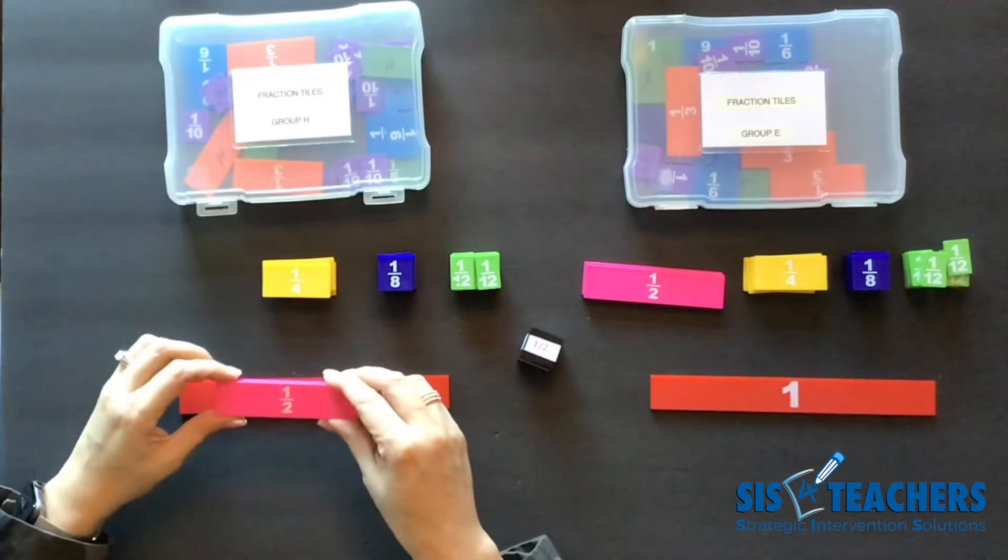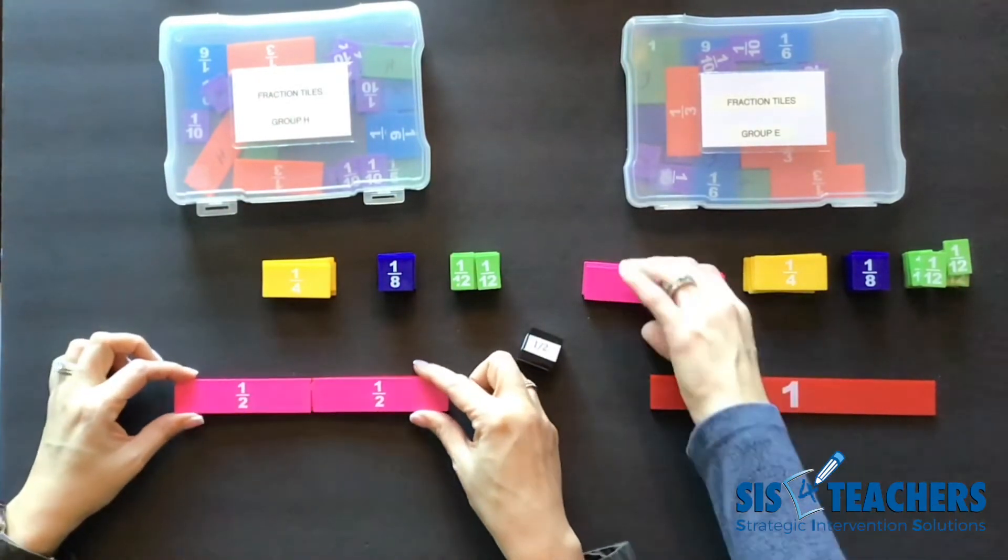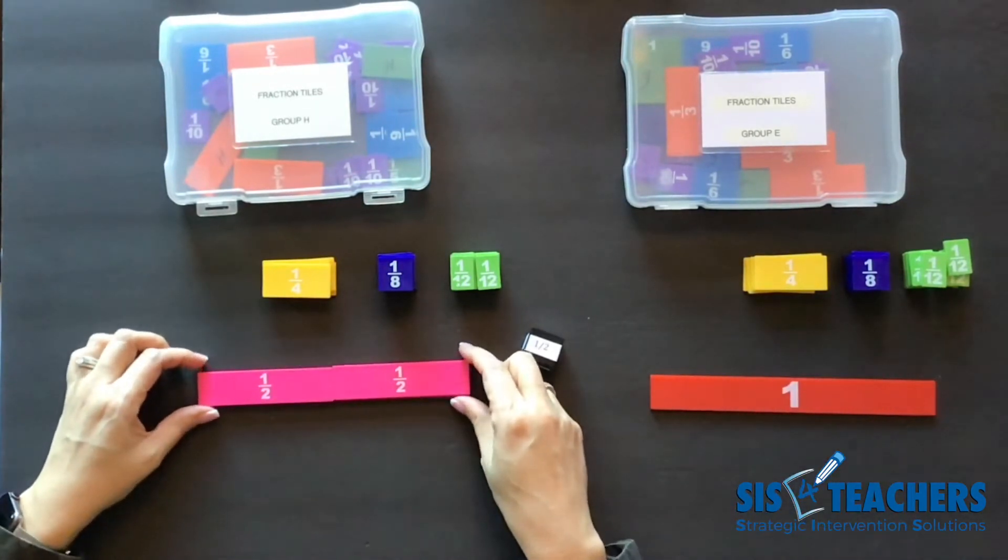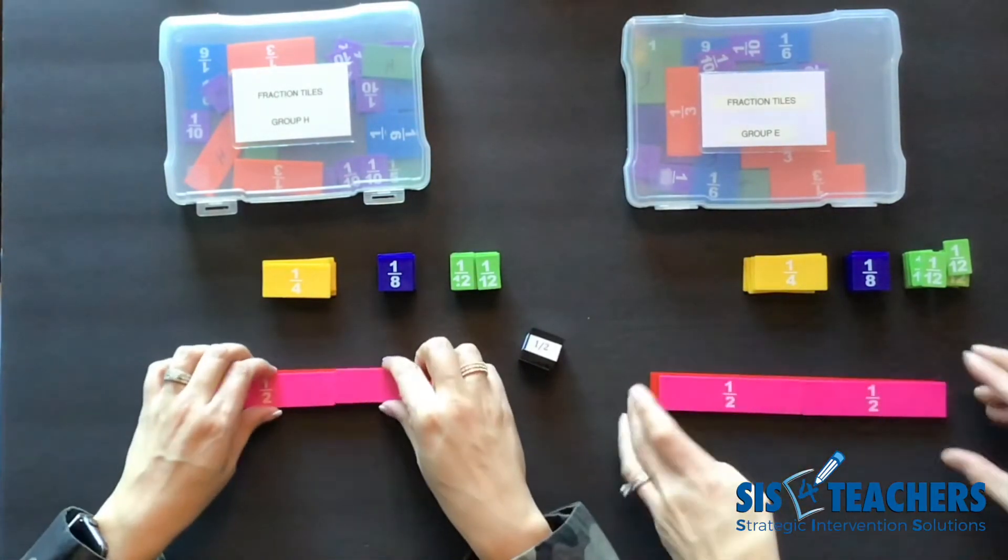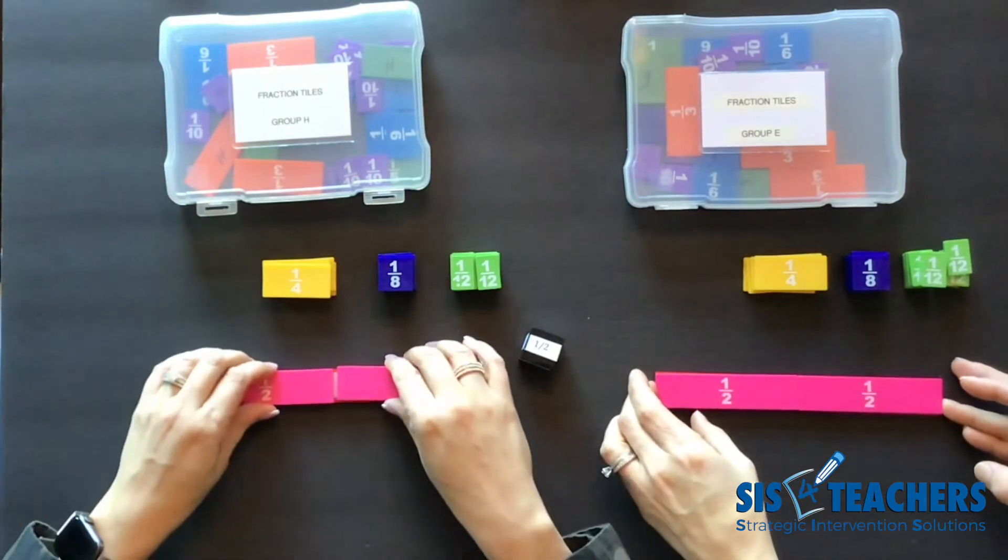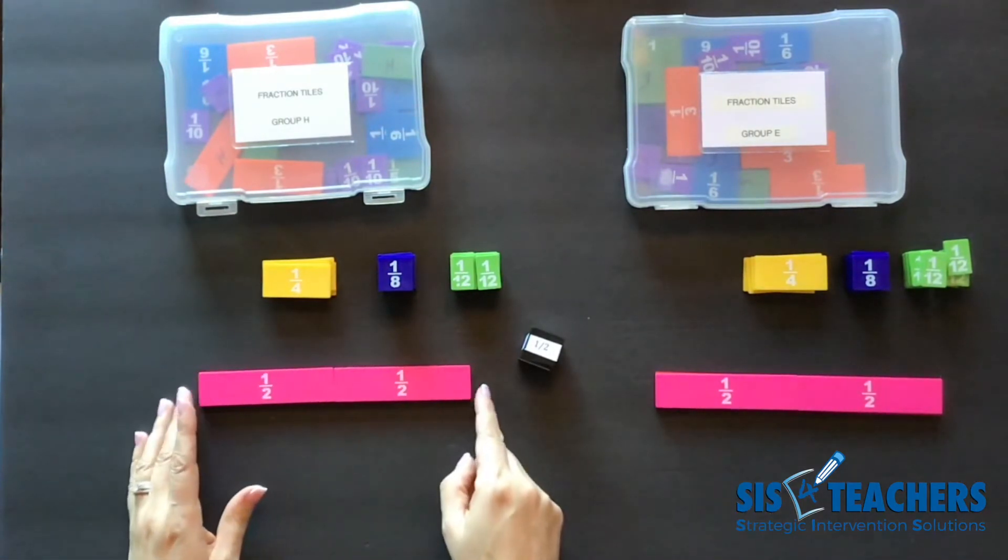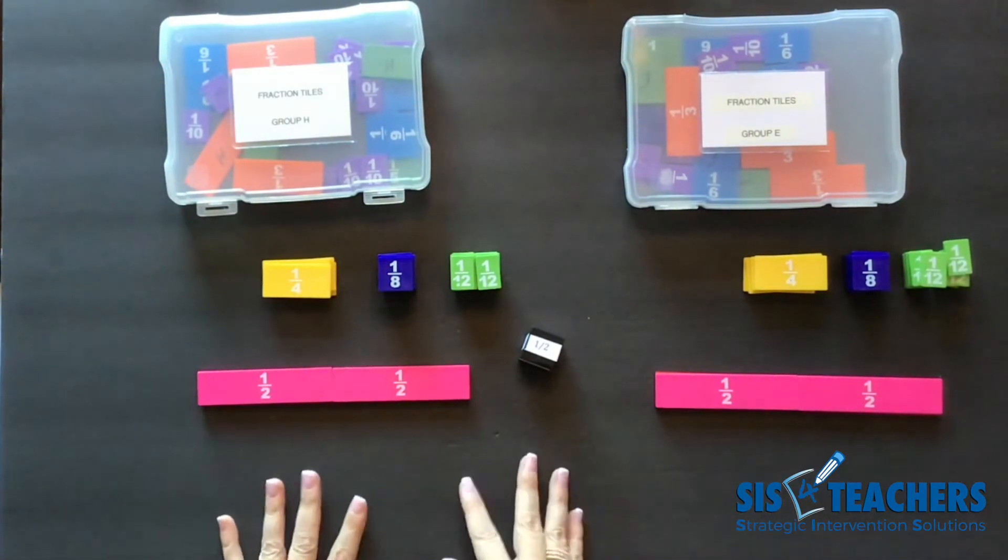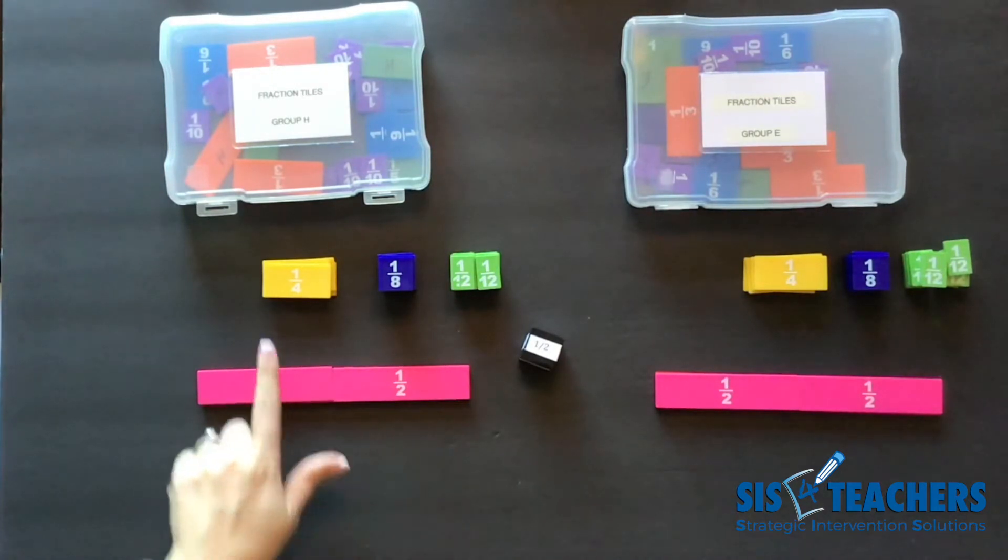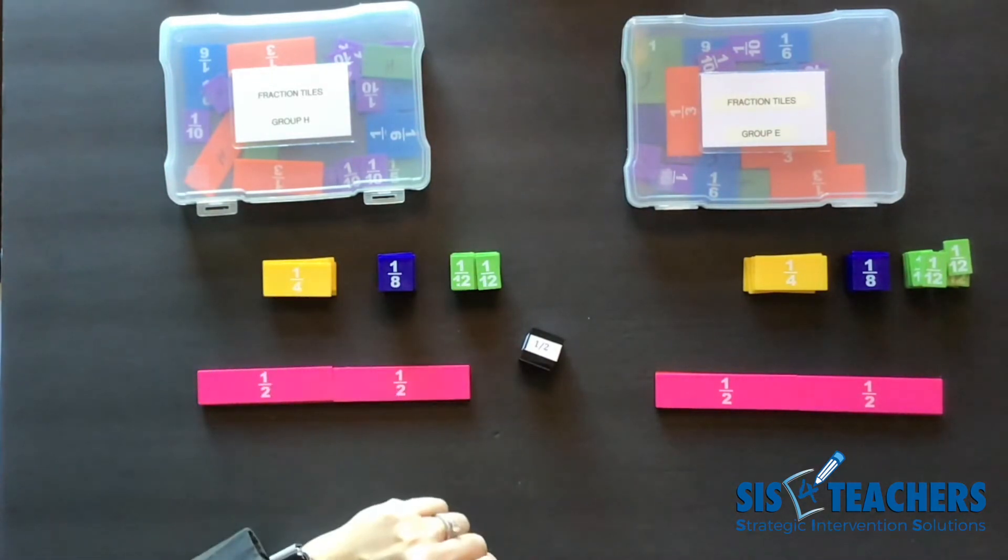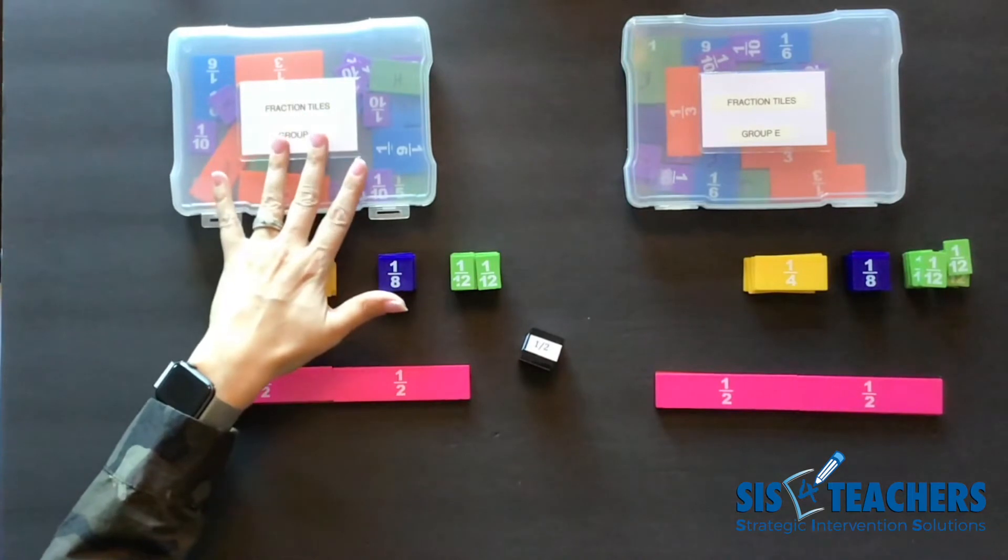So my partner and I are going to take our two halves and we're going to cover our whole. The object of this game is to uncover to get back to our whole. In this case we have a few options when we roll the dice. We're using half, fourth, eighth, and twelfth that is taken out of our fraction tool kit.